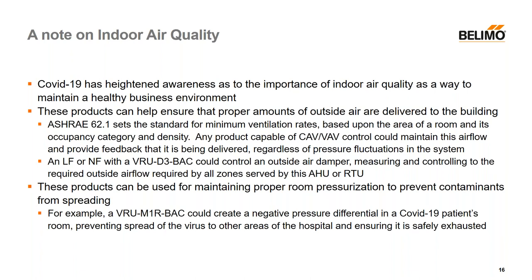Separate from airflow, when talking about room pressurization, you can also use room pressurization as a technique to mitigate the flow or spread of contaminants. The example I'd give is that a VRU-M1R-VAC could create a negative pressure differential in a COVID-19 patient's isolation room. When you create that negative pressure differential, if somebody opens the door to the corridor, air flows from the corridor into the room — not the other way around. You won't have potentially contaminated air moving out into the corridor and spreading the virus. The contaminated air would be safely exhausted somewhere with no occupancy. So there are a few different techniques you can use to help improve indoor air quality.